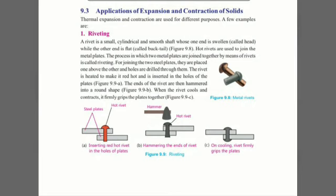After heating this metal rivet, we insert it into the holes of the two steel plates. One rivet has a swollen part, the head, while the other part is flat, like a bug tail. Then we hammer the bug tail side.